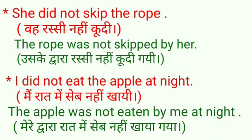Next: 'I did not eat the apple at night.' जब भी आपको longer sentences मिलें जिसमें subject, object और verb के अलावा भी कुछ part हो, तो बस subject, object और verb को identify करें। Passive वैसे ही बनाएंगे, और extra words जैसे 'at night' को as it is लिख देंगे। Object है 'the apple' — singular, so 'was not'; third form of 'eat' is 'eaten'; 'I' becomes 'me' — 'by me'; फिर 'at night' as it is। Rules follow करना है, tension नहीं।